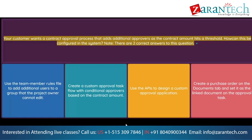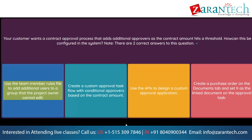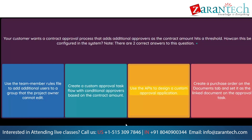Question: Your customer wants a contract approval process that adds additional approvers as the contract amount hits a threshold. How can this be configured in the system? Note: there are two correct answers. Option 1: Use the team member rules file to add additional users to a group that the project owner cannot edit. Option 2: Create a custom approval task flow with conditional approvers based on the contract amount. Option 3: Use the APIs to design a custom approval application. Option 4: Create a purchase order on the Documents tab and set it as the linked document on the approval task.